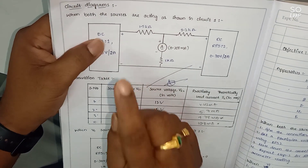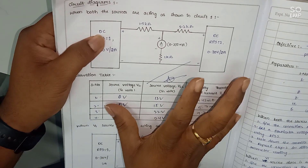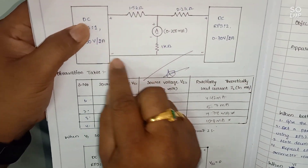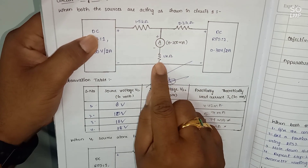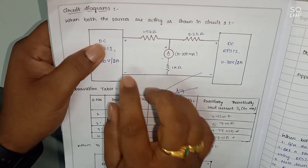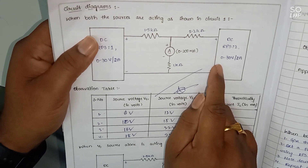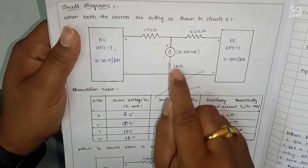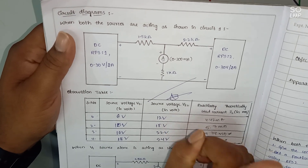While finding the individual responses, one source is short circuited and at a time one source is acting in the circuit. We are finding the individual responses due to these sources, and finally we are adding the total response. We are getting the response in this one kilo ohm resistor. Once again, the statement of superposition theorem: in any linear active bilateral network consisting of more than one independent source, the response in any one of the branches is equal to the algebraic sum of responses due to each independent source acting alone.